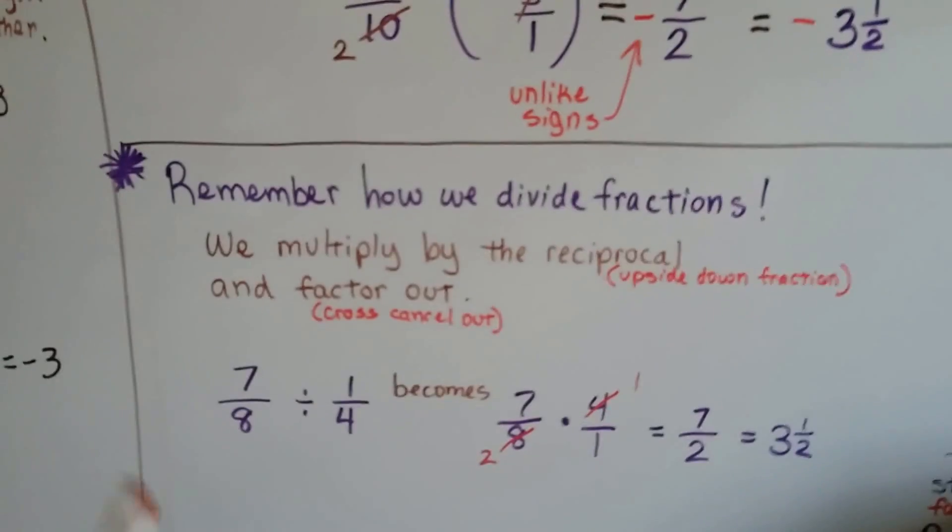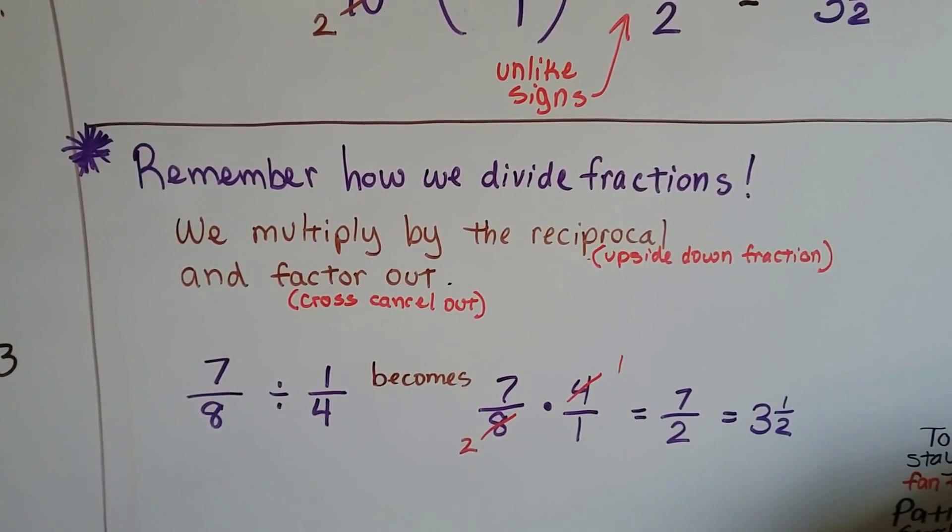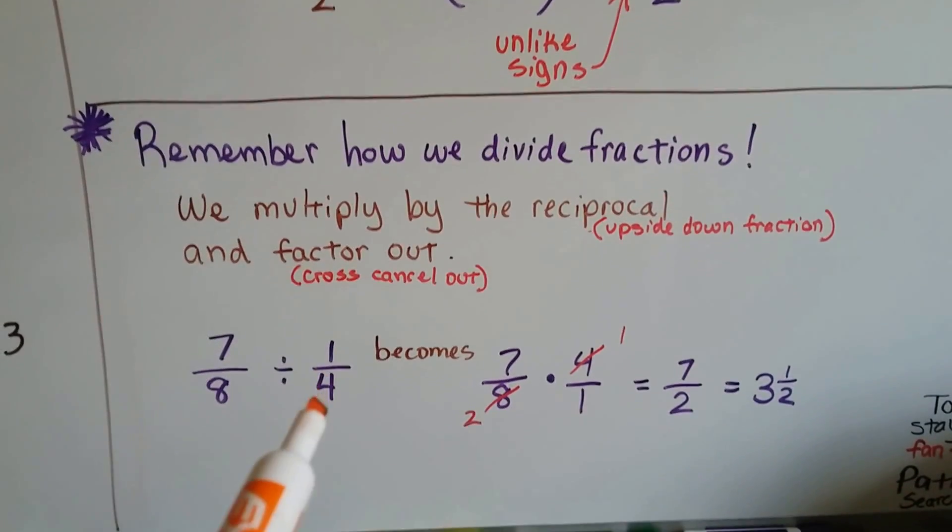So just remember how we divide fractions. We multiply by the reciprocal, the upside down fraction, and we factor out. We cross cancel out.